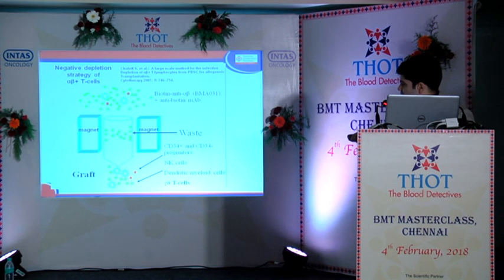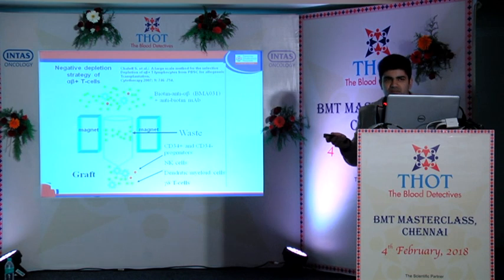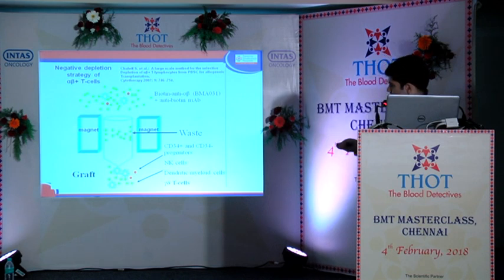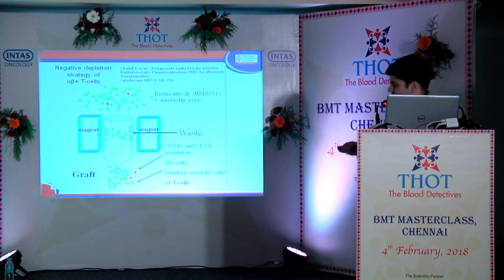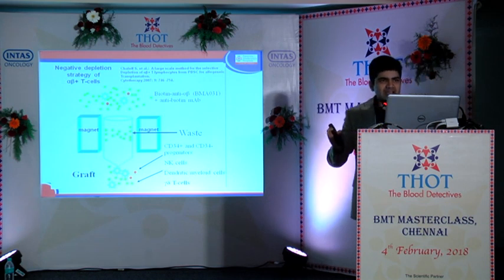What it does is that it removes the alpha and beta cells from the product. So you have taken alpha, beta cells out, and the gamma and delta cells, CD34 cells, and NK cells are the ones which go into the product finally and are given to the patient.